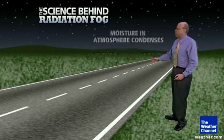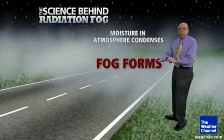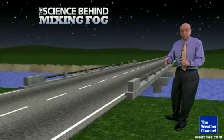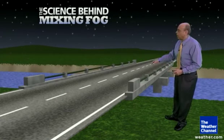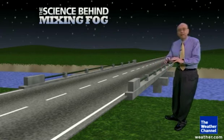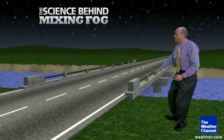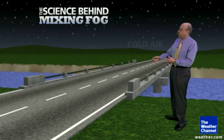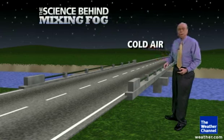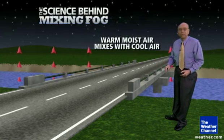We call that ground fog, and of course it can be pretty widespread and make for some tough driving. Now there's another situation — not due to cooling but to adding moisture to the air — and that's especially favored in places near river valleys or stream valleys where the warm water gives off moisture into cool air. So it's a moistening process that forms the fog.